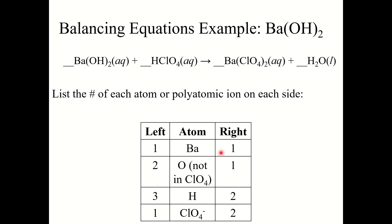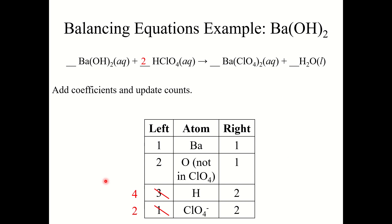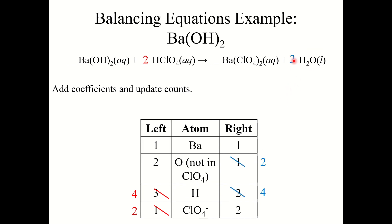I've got 1 barium on both sides. Oxygens, hydrogens, and perchlorates are all unbalanced. I start by balancing perchlorates: 2 on the right, only 1 on the left, so I place a 2 in front of HClO4. Now I've got 2 perchlorate ions on both sides, giving me 2 oxygen atoms and 4 hydrogen atoms on the left. I then place a 2 in front of H2O, giving me 2 oxygens and 4 hydrogens on the right. Final check: 1 barium, 2 oxygens, 4 hydrogens, and 2 perchlorate ions on each side — balanced.